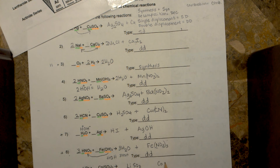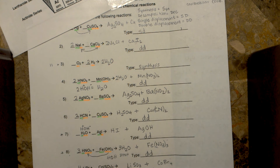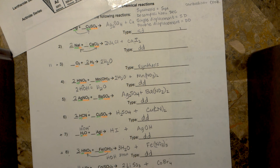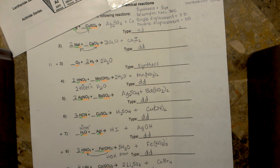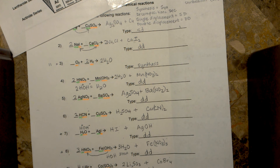So cobalt(IV) with bromine — bromine is a one and cobalt is a four, so when you crisscross you get CoBr₄. Then to balance: four lithiums and four lithiums, four bromines and four bromines, one cobalt and one cobalt, two sulfites and two sulfites.